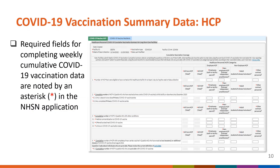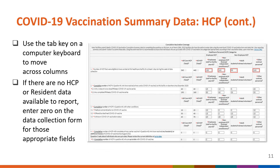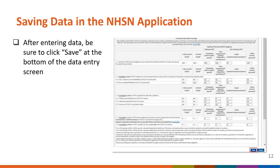Required fields for completing weekly COVID-19 vaccination data will be denoted by a red asterisk next to the field in the NHSN application. Complete the required fields by reporting your data into the application. Use the tab key on your keyboard to move across the columns as you enter your data. If there are no healthcare personnel or resident data available to report, please enter zeros on the data collection form for those appropriate fields. After entering and reviewing your data, please be sure to click on the blue Save button at the bottom of the data entry screen.